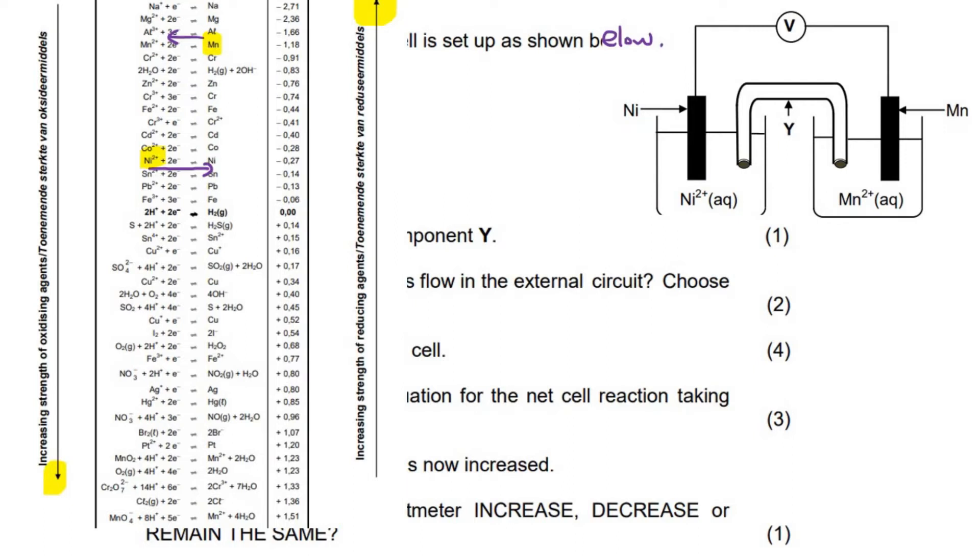So it tells us that the Ni is going to have a reduction reaction. So it's going to go Ni2+ plus two electrons gives us Ni. I'm just copying that. And then this one is going to go the other way. So this one's going to go Mn turns into Mn2+ plus two electrons. So can you see that on this side, it's going to use up two electrons. And then on this side, it's going to give away two electrons.